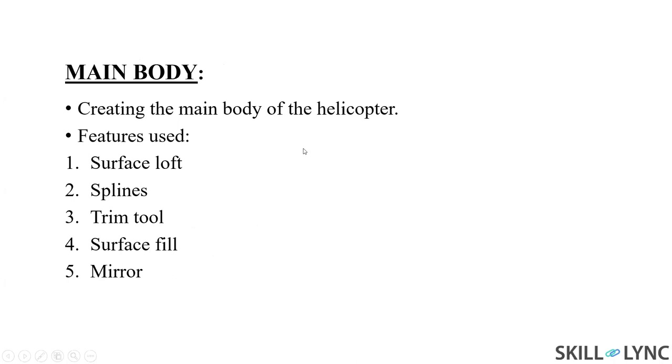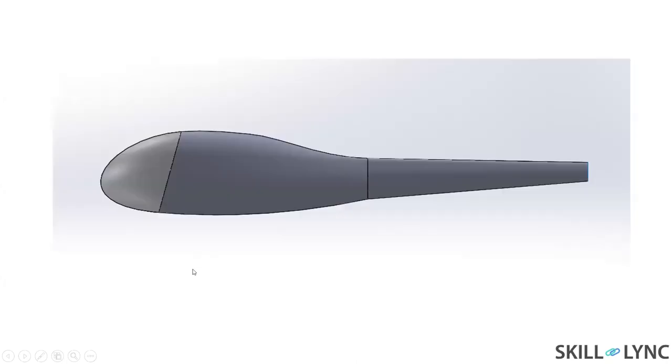The main body of the helicopter: the main features I have used are surface loft, splines, trim tools, surface wheel and mirror. Here you can see the main body of the Gazelle helicopter. This is the front portion with a glass appearance.